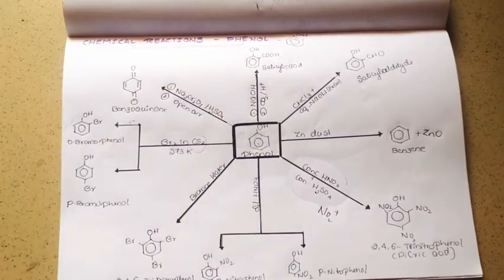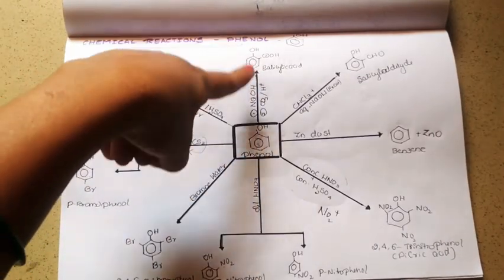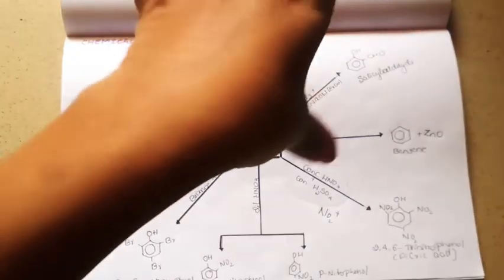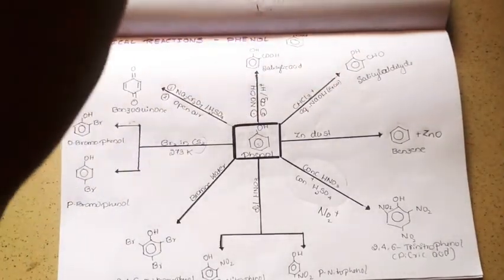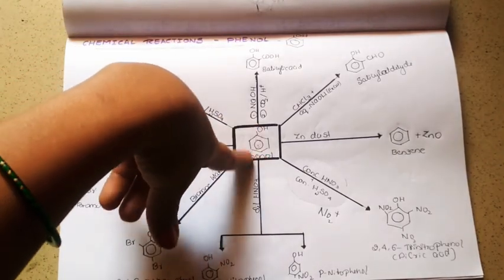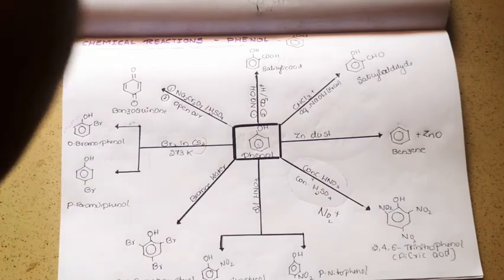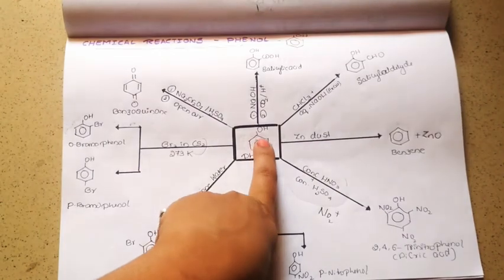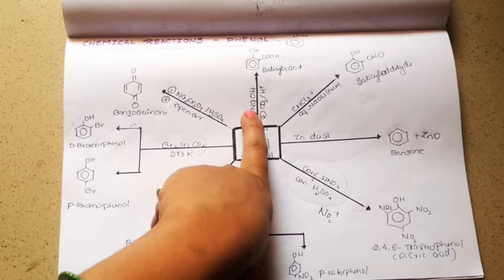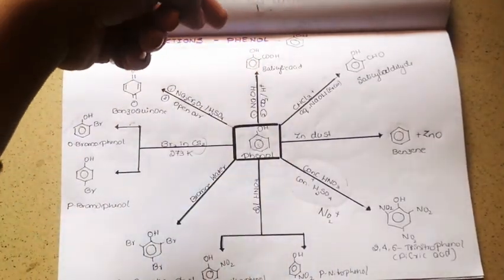When phenol is treated with sodium hydroxide, it results in the formation of sodium phenate. Phenol is highly acidic in nature due to the formation of a phenoxide ion, which undergoes resonance, stabilizing the ion and releasing H⁺. So whenever phenol needs to undergo a particular reaction, it is first treated with sodium hydroxide so it turns into a salt, followed by treatment with carbon dioxide and further acid hydrolysis.